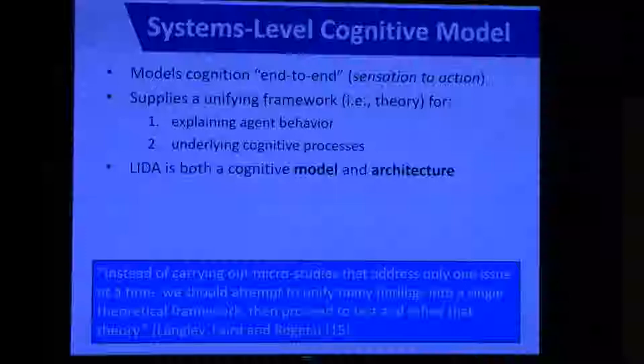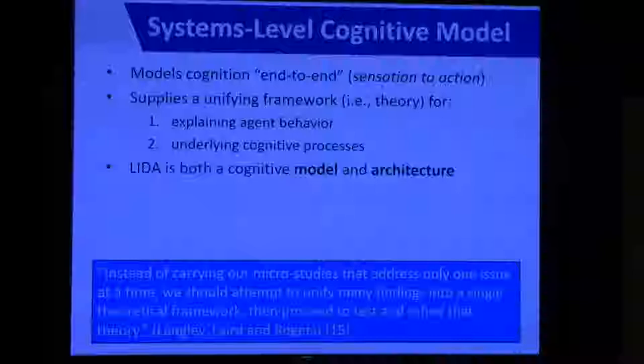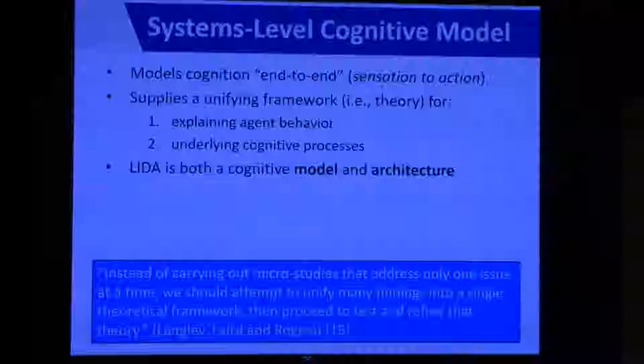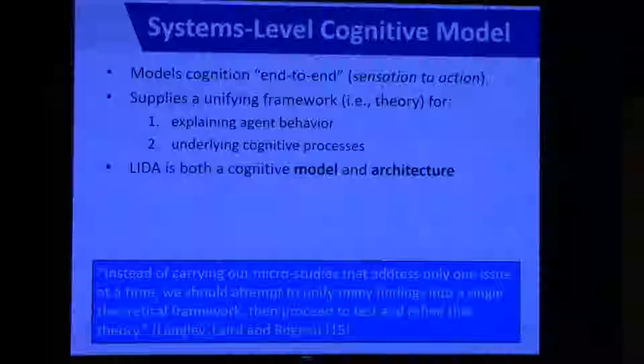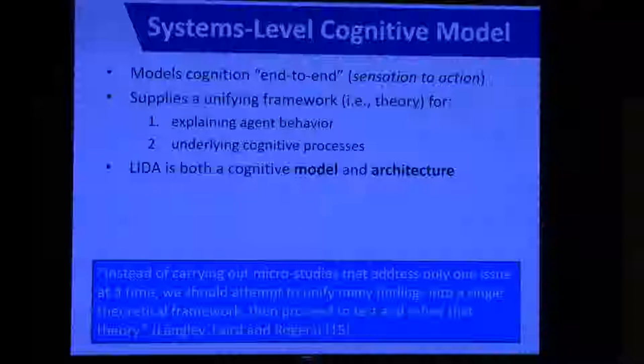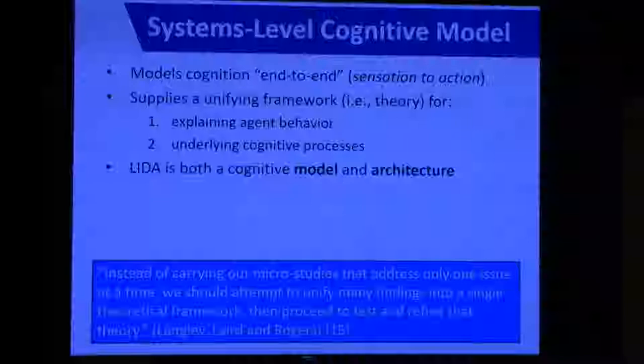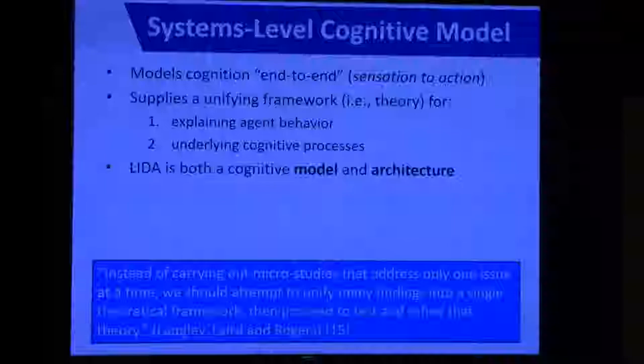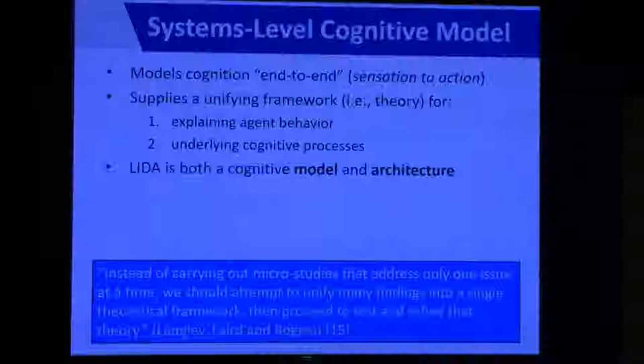As a motivating quote for why we might want to do systems-level cognitive modeling, there's this quote from Langley, Laird, and Rogers: 'Instead of carrying out micro-studies that address only one issue at a time, we should attempt to unify many findings into a single theoretical framework, then proceed to test and refine that theory.' In other words, if we don't consider things at a systems level, we'll miss the relevant details that glue together cognition and remain selectively blind to interactions between components.